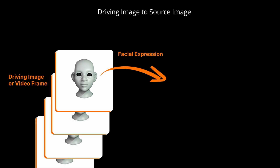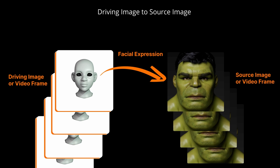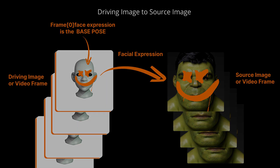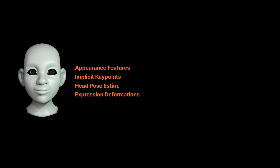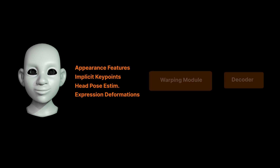For Live Portrait to work, we need a driving image or video, from which we will detect the facial expression and transfer it to what is called a source image or video. The first frame of a driving video is a base pose and is the reference facial expression, to which we'll compare all the future frames to understand if the face is more happy, more sad, the brows are up or down, mouth open or closed, and so on. Live Portrait extracts several types of data from the driving images, such as appearance features, implicit keypoints, head pose estimations, expression deformations, and a few others, and maps all that motion on the source image through what we call a warping module.